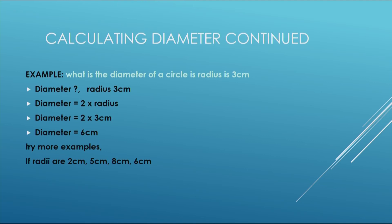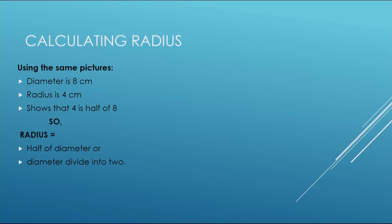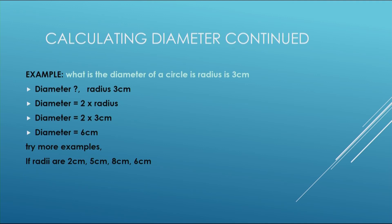You can try more on your own in your practice book. If the radius is two, what would be the diameter? Same procedure — two plus two, so the diameter is four. If the radius is five, it's five plus five or five times two, which is ten. If the radius is eight, eight plus eight — your answer is sixteen. And if the radius is six, six plus six gives the diameter twelve centimeters.